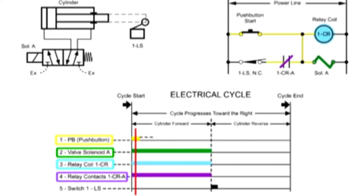This sets up a holding circuit through switch 1LS and contacts 1CRA, which keeps current on the relay coil and the valve solenoid, even though the push button has been released.